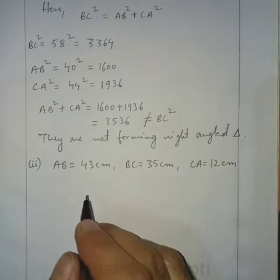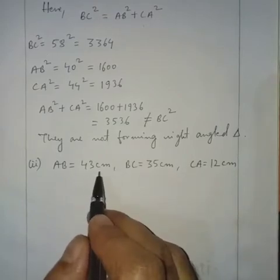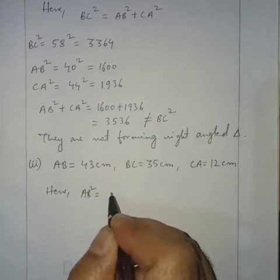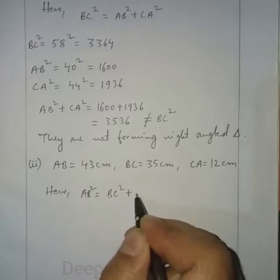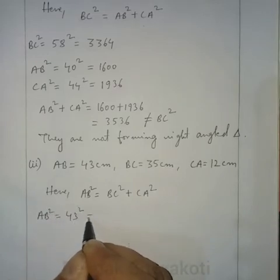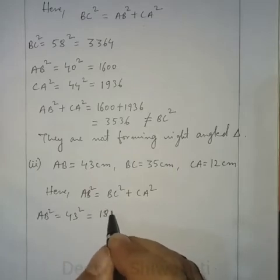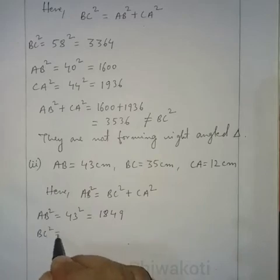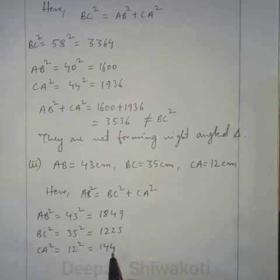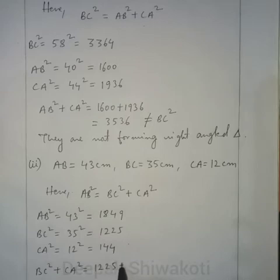Among the three sides, 43 is the longest, so take it as the hypotenuse. If it is a right-angled triangle, then AB² = BC² + CA². AB² = 43² = 1849. BC² = 35² = 1225, and CA² = 12² = 144.